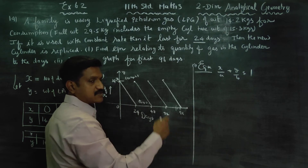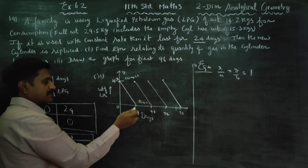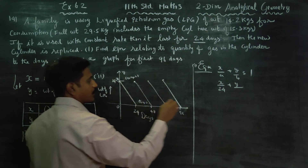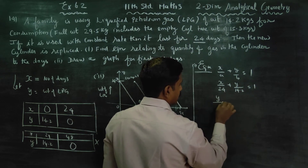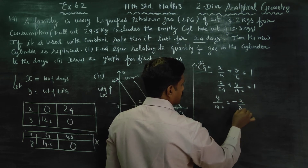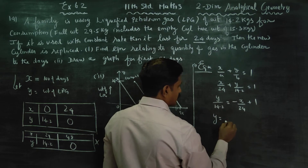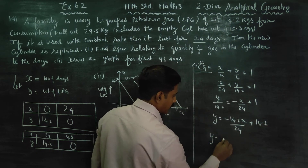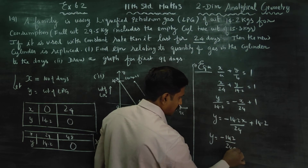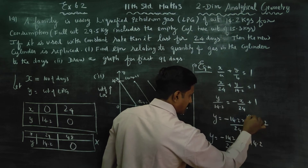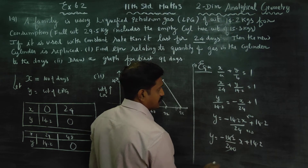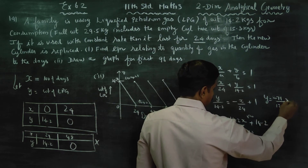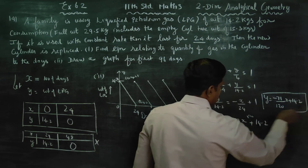These are parallel lines. Parallel lines have the same equation. Using the x-intercept and y-intercept: the x-intercept is 24 and the y-intercept relates to the LPG weight of 14.2.